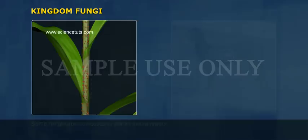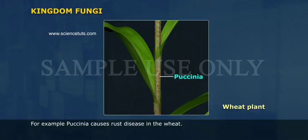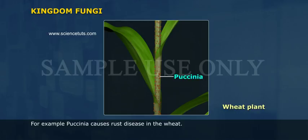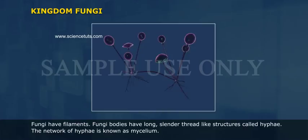Some fungi cause diseases in plants and animals. For example, Puccinia causes rust disease in wheat. Fungi are cosmopolitan, but they prefer to grow in warm and humid places.